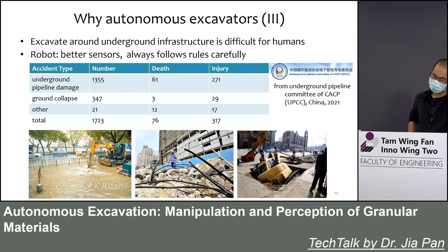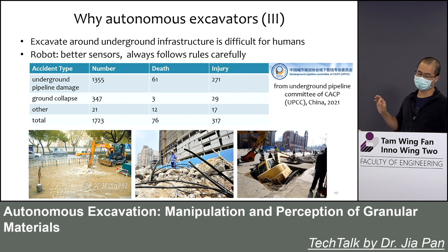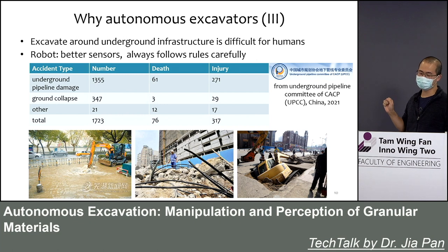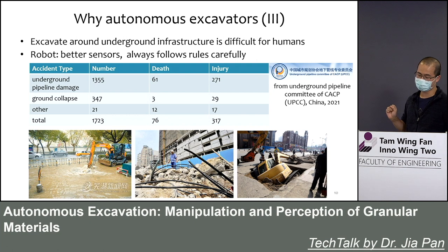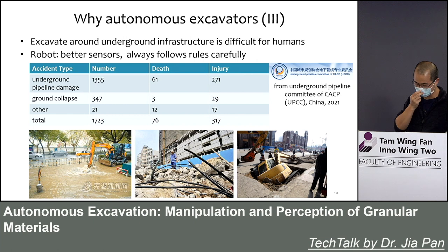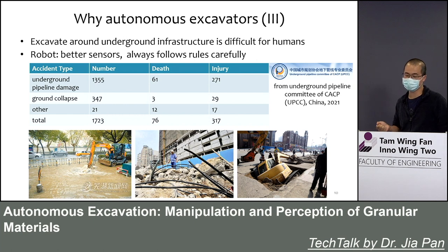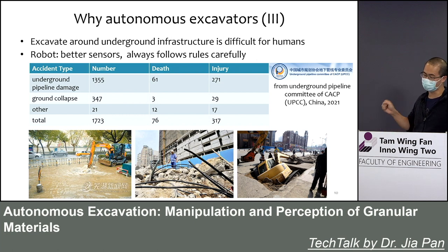A third reason is that humans cannot see through the soil, so they cannot find objects buried underground. As a result, even the most skilled workers can make mistakes and damage underground infrastructure like pipes or cables during excavation. Compared to humans, robots have better sensors and can carefully follow rules to safely avoid underground objects.